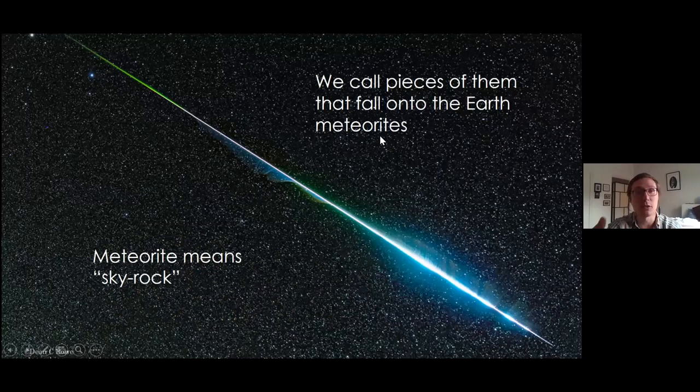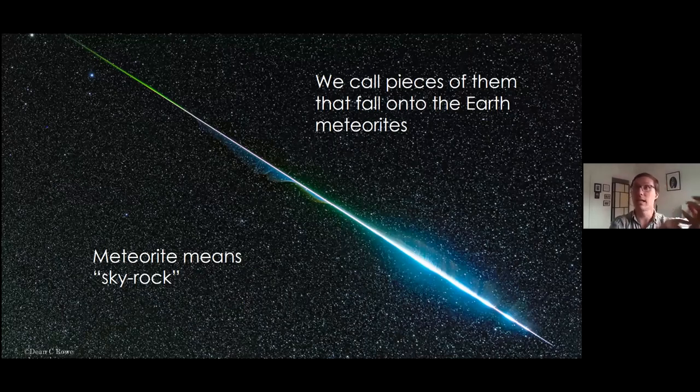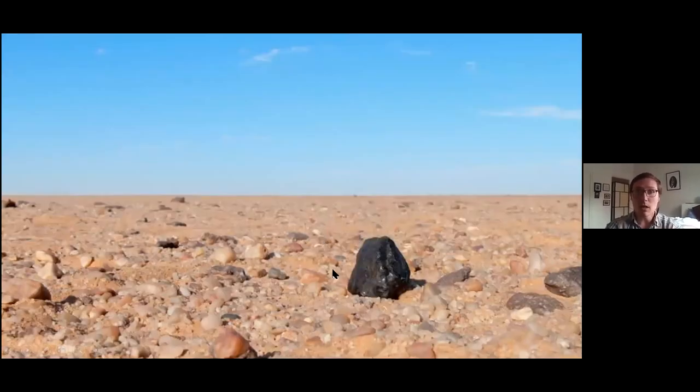We call the pieces that actually fall to Earth meteorites. Meteorites and asteroids are the same kinds of things most of the time. One problem is we don't always know the connection between a meteorite type and which asteroid type it belongs to, but we know they're the same object. The meteorites are just pieces of asteroids that have fallen down. The name means sky rock. When they fall to the ground, they often look like a dark rock. Many are found in places with light-colored backgrounds like the Sahara or Antarctica, because they're easier to identify in flat terrains where they stand out.